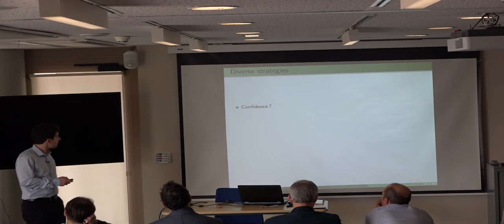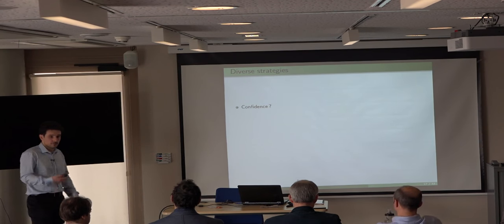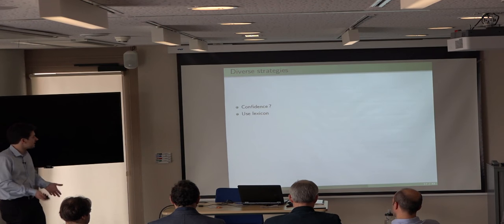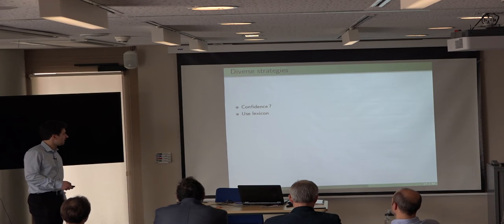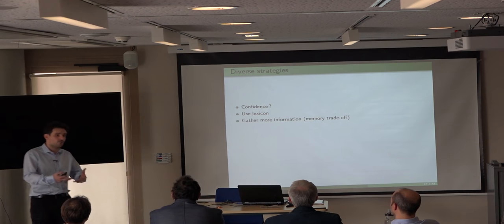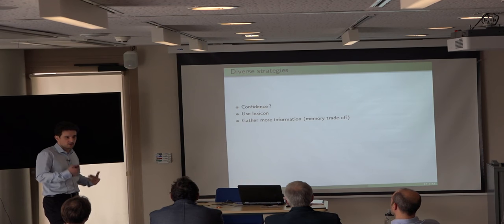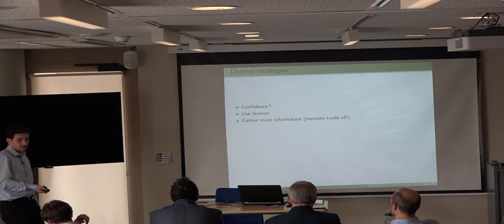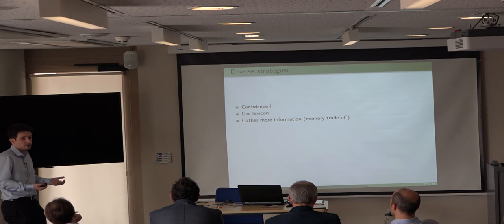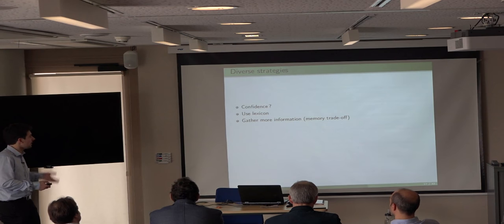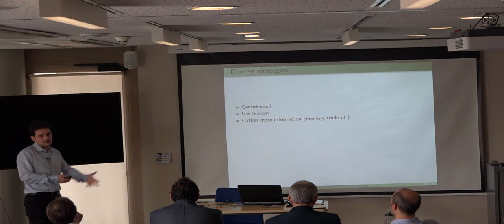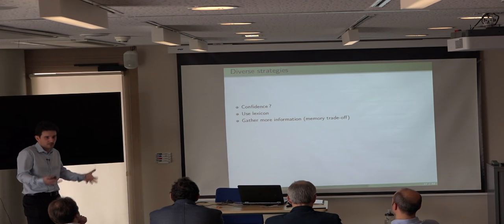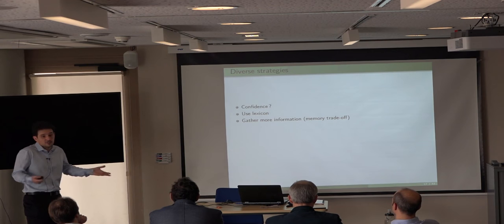How can we build a measure of confidence? The first thing we can use is the state of the lexicon itself, but that might not be enough — you might also want to keep track of past interactions. However, remembering everything would not make sense because we want to reduce memory usage and avoid the complexity burst. So there's a trade-off between the level of refinement of the strategy, the quantity of memory it uses, and the efficiency of the strategy in the end.